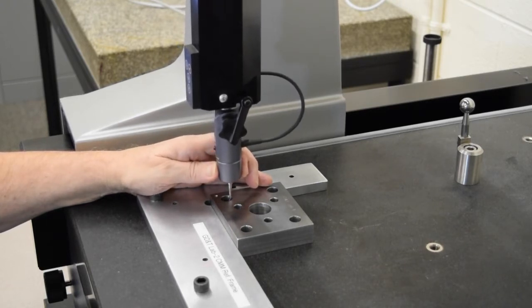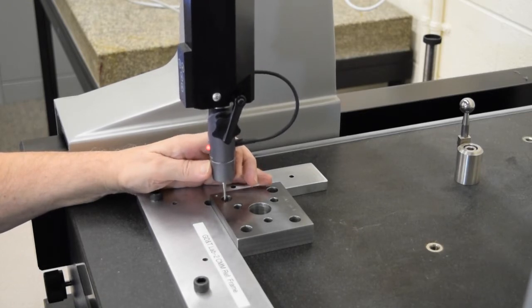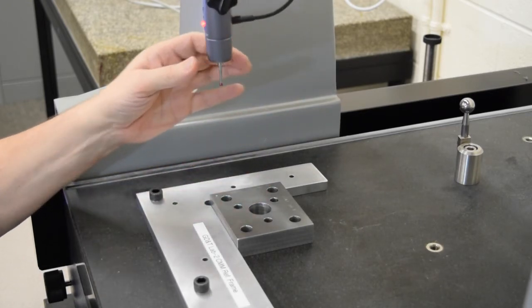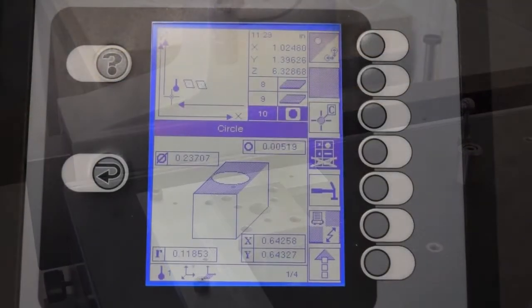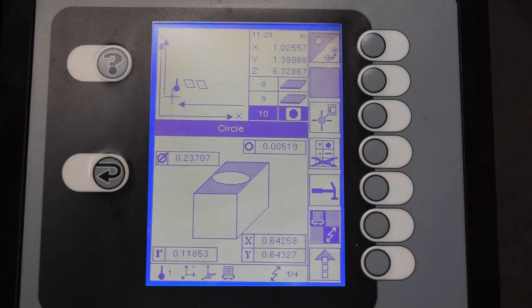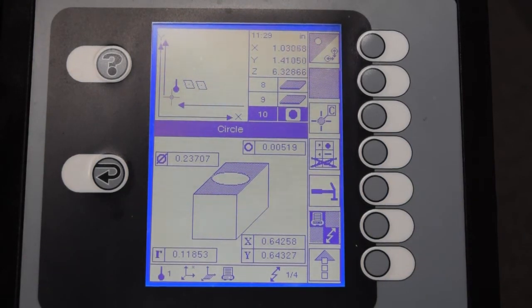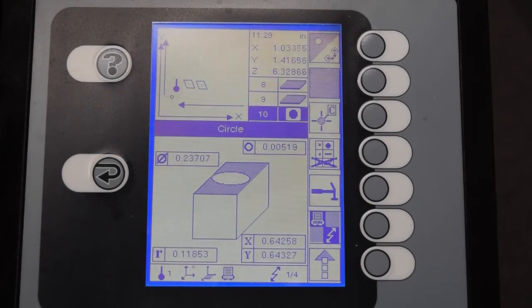After you sample around the inside of the circle, take probably at least six points or so, then hit the check box. And what you should see is a picture of a hole in a block. If you don't see that picture, then it's decided it measured a rectangle or a plane or something. You can cancel the measurement and start over.